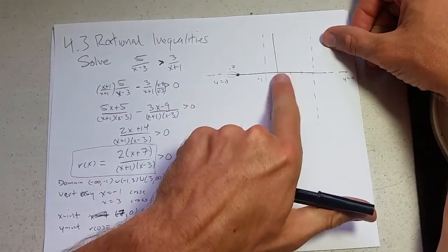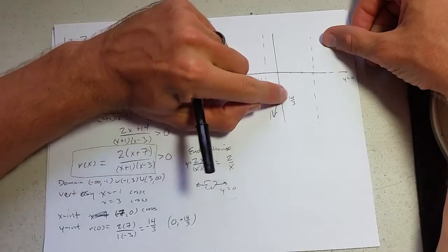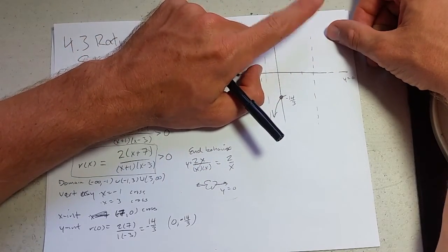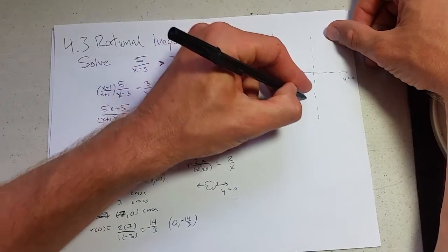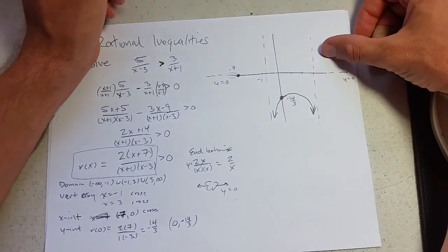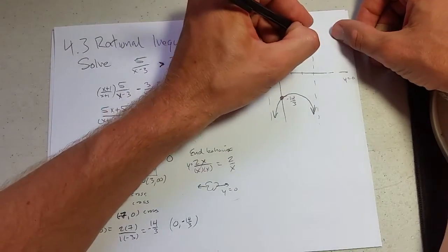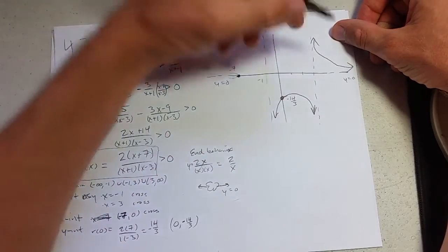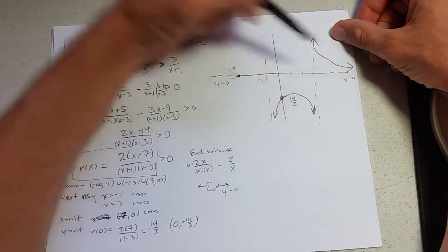Now, I do not have an x-intercept, so I cannot go up and approach the vertical asymptote up here. So, I am forced to go back down. Now, I am going to use the cross of this vertical asymptote to come back out of this side. And, I have to approach the horizontal asymptote.